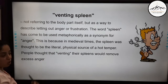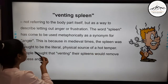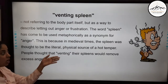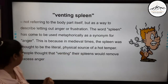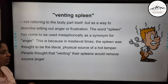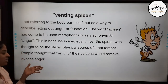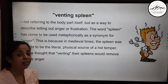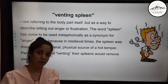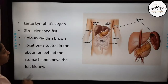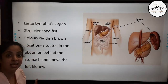This is because in medieval times, the spleen was thought to be the literal physical source of hot temper. People thought that venting their spleens would remove the excess anger. Thank God that now we know a lot more about spleen. So let us find out what spleen actually is, scientifically.